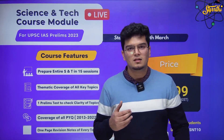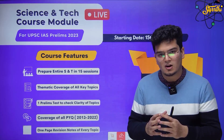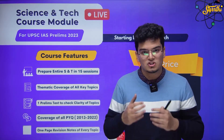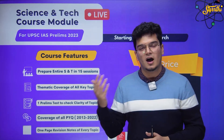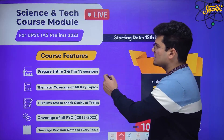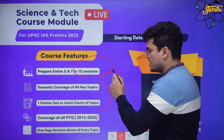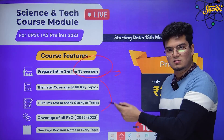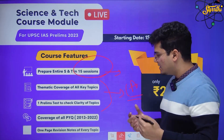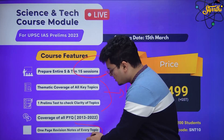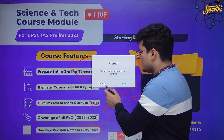So what have we learnt? To solve UPSC PYQs and future questions, you will require conceptual clarity for science and tech, not just current affairs knowledge. To come up with a one-step solution, I am collaborating with Edsarthi for the science and tech course where we can complete the entire science and tech in 15 sessions. We will cover all the key topics, there will be a test to check your conceptual clarity, current affairs will be completely covered, the price has been kept very affordable, and there will be one-page revision notes and coverage of all previous year questions. You can check out the course in the description of this video.